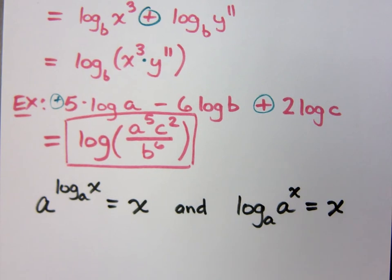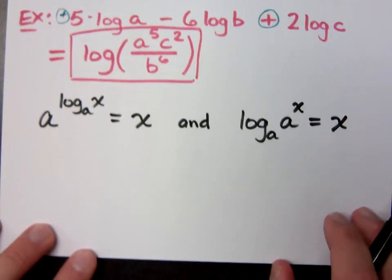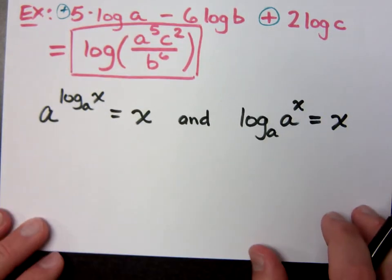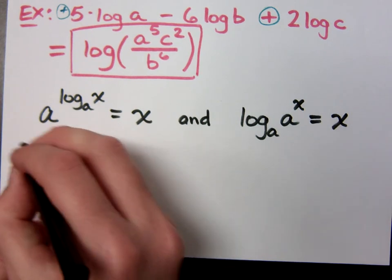a to the log with base a of x is x, as well as log with base a of a to the x is equal to x. These are theorems based on inverses. You may go, this looks so crazy. Check this out.